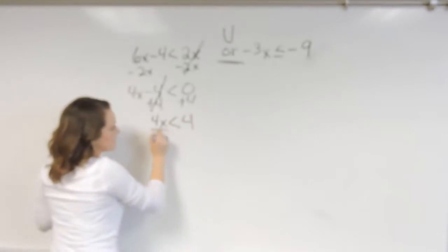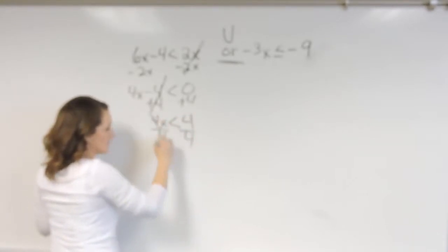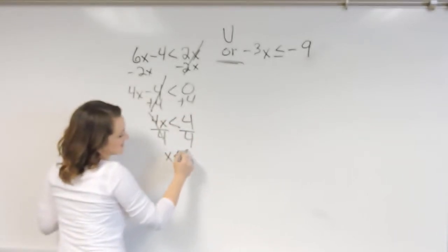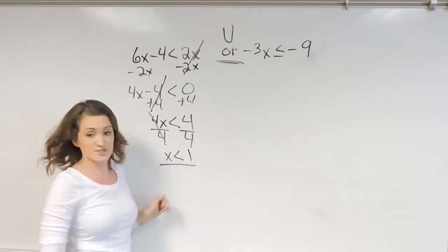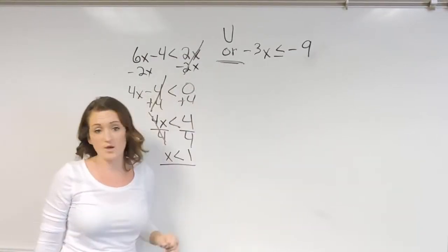6x minus 2x is 4x and we drop down this minus 4. So I'm going to move that 4 to the other side. Negative 4 plus 4 cancels and 4x is less than 4. Dividing out the coefficient there, I'm left with x is less than 1. So I'm going to pause for just a moment while I solve that inequality.